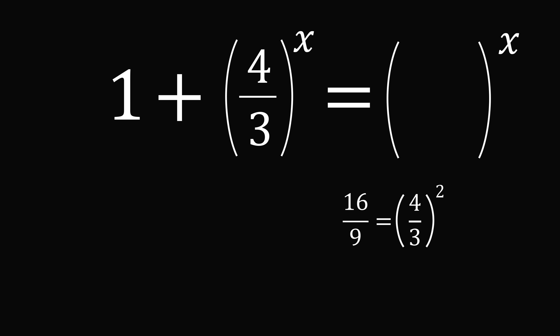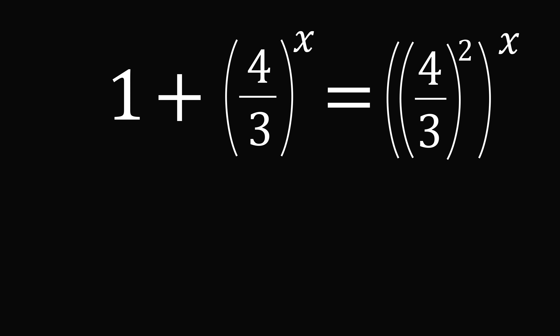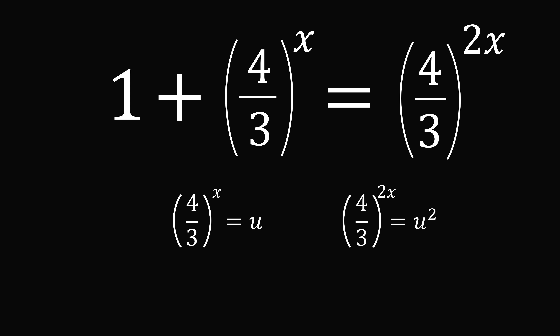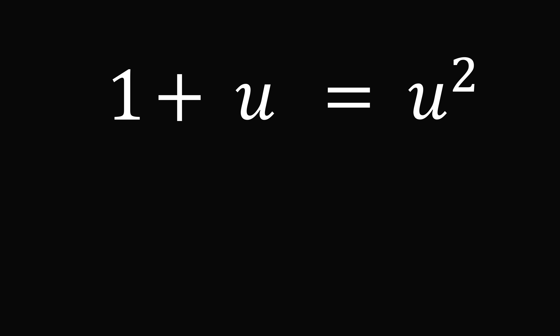Now we have 4 over 3 squared, raised to the power of x where x is a real number. Since we're raising a power to a power, we can multiply the exponents, giving 2 multiplied by x. We now make a substitution: let u be equal to 4 over 3 raised to the power of x. Then the square of u equals 4 over 3 raised to the power of 2x. So we substitute these variables in, and we have the simple equation 1 plus u is equal to u squared.